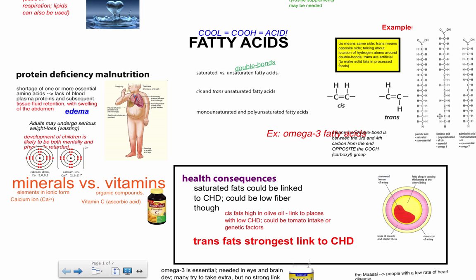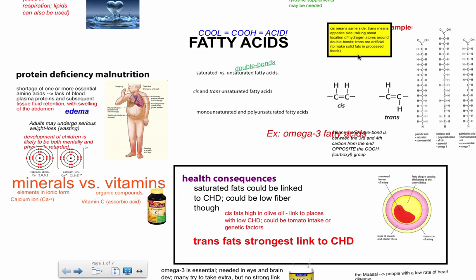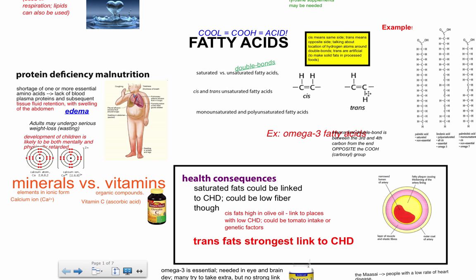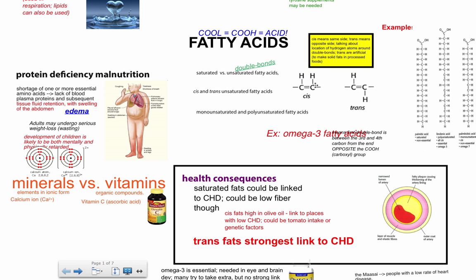For unsaturated fatty acids, you can separate them into cis and trans. Cis means the hydrogens are on the same side of the double bond, while trans means the hydrogens are spread out on opposite sides. Most natural fats are actually cis, whereas trans fats are artificial ones used in food processing — and that has health consequences.